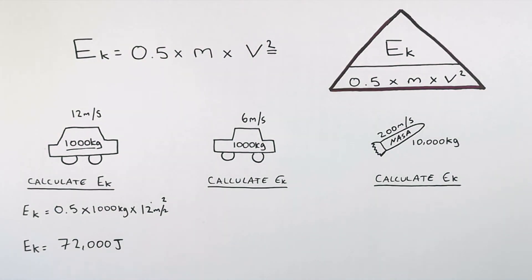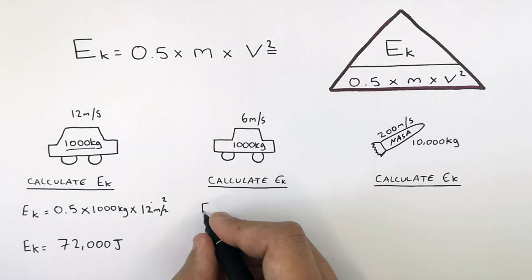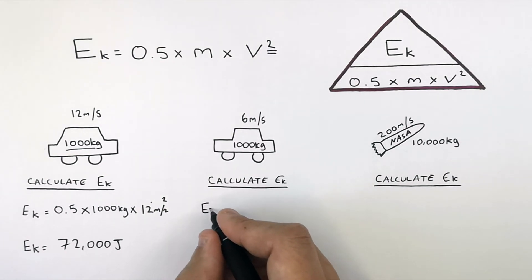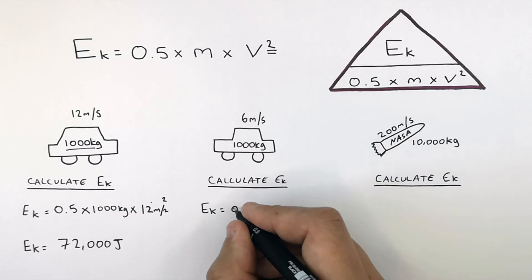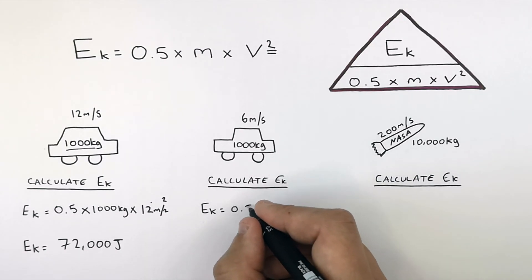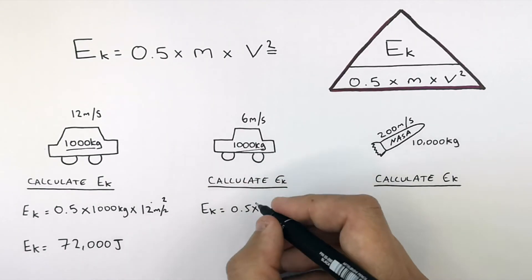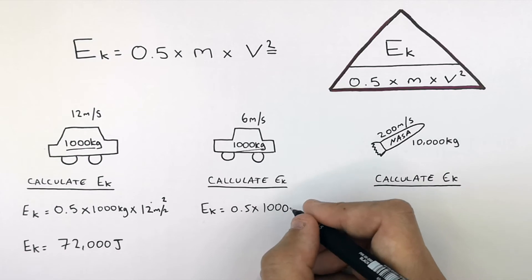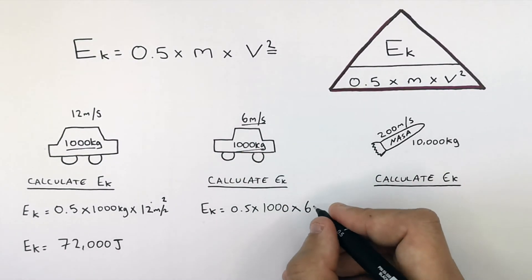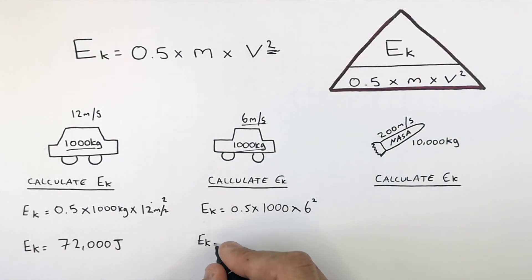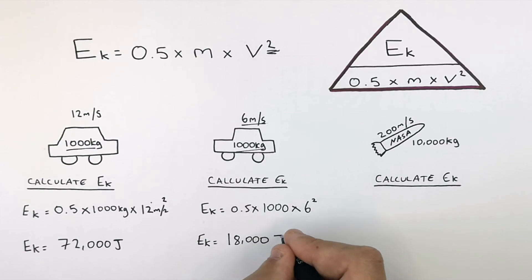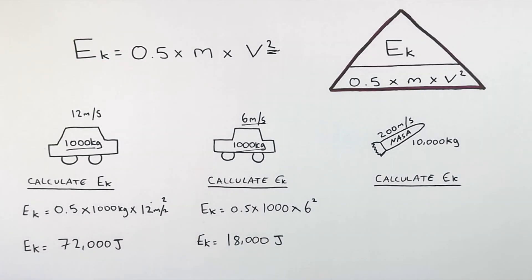For the second example, we recall E equals 0.5 times mass times velocity squared and simply substitute in the numbers. E equals 0.5 times 1,000 kilograms times 6 squared, which gives a kinetic energy stored in this object of 18,000 joules.